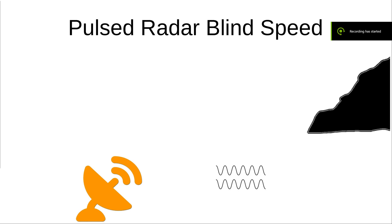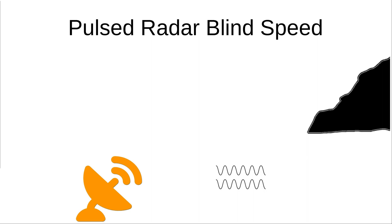Pulsed radar blind speed — what is it? Let's take a quick simplified look. We've got a radar sitting out here and it's sending out pulses at a specific interval. We're going to call how many times this radar sends out a pulse of energy in one second the pulse recurrence frequency. For our purposes here, we're going to say it has a pulse recurrence frequency of 800 pulses per second.